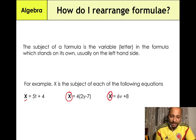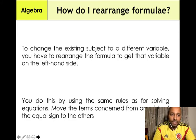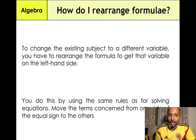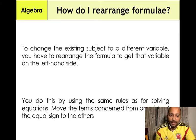To change the existing subject to a different variable, you have to rearrange the formula to get that variable on the left-hand side. You can do this by using the same rule as solving equations — move the terms concerned from one side of the equation to the other side.